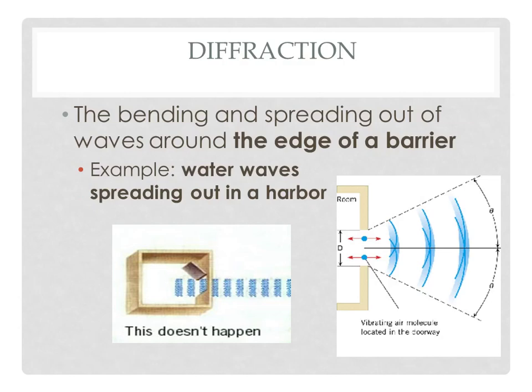Finally, diffraction is the third type of interaction that you might see. This is when waves bend and spread out around the edge of a barrier. So in this picture here we've got a room and sound is traveling out of the room and out of the doorway. If you're walking down the hallway in the middle of a class, you probably notice that you can hear teachers' voices traveling up and down the hallway. It's not as though you walk by the door and that's the only time you're going to hear what's going on inside the classroom. So that's an example.